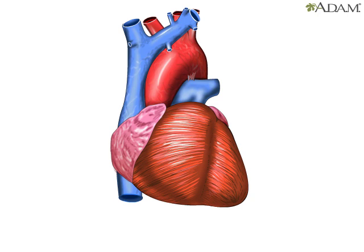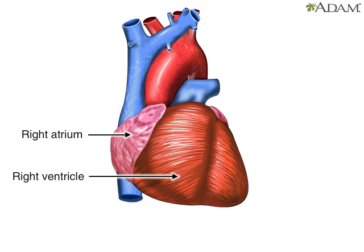The heart has four chambers and four main blood vessels that either bring blood to the heart or carry blood away. The four chambers are the right atrium and right ventricle, and the left atrium and left ventricle.